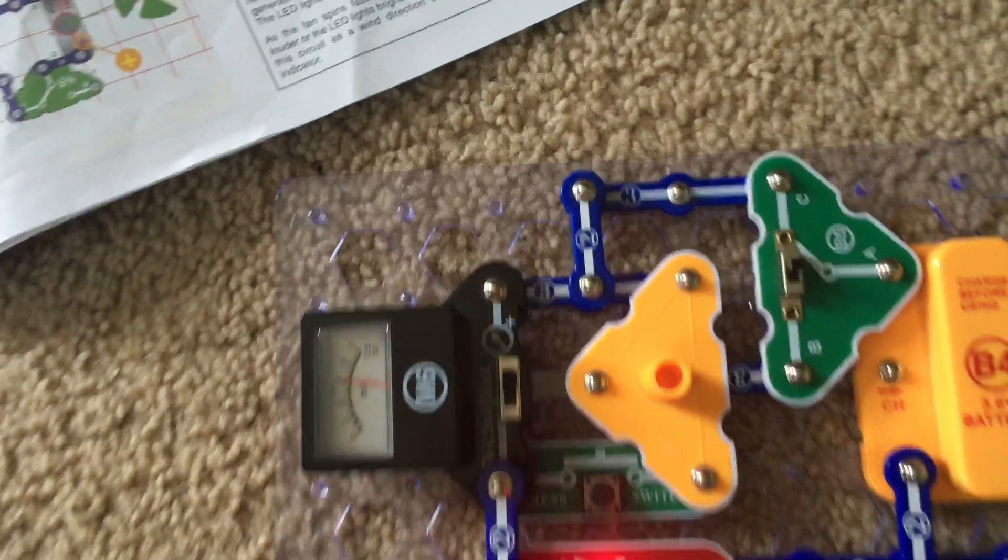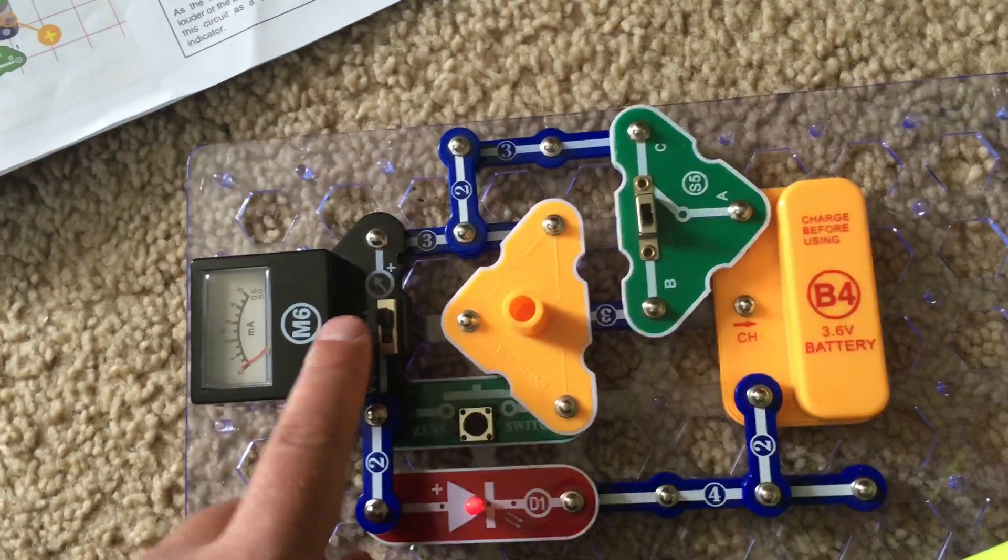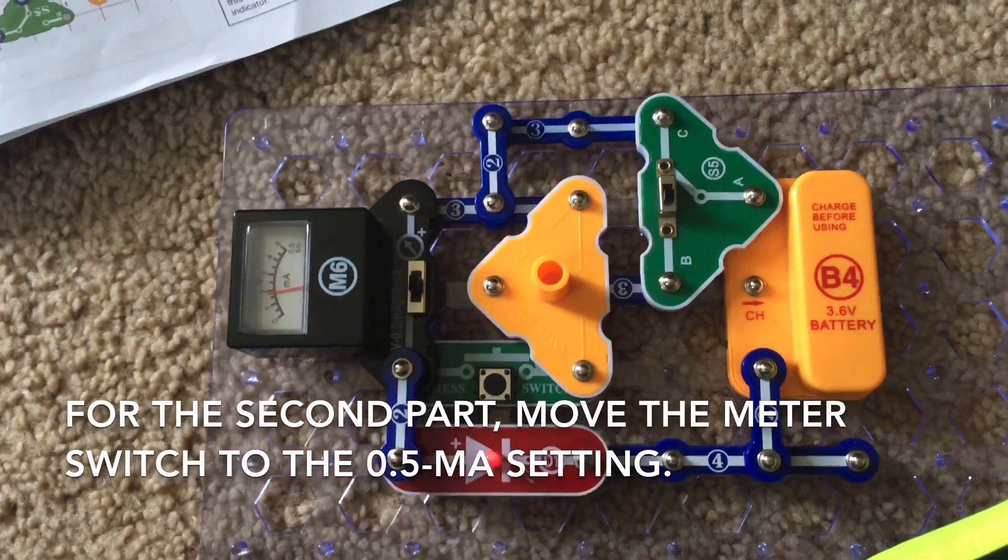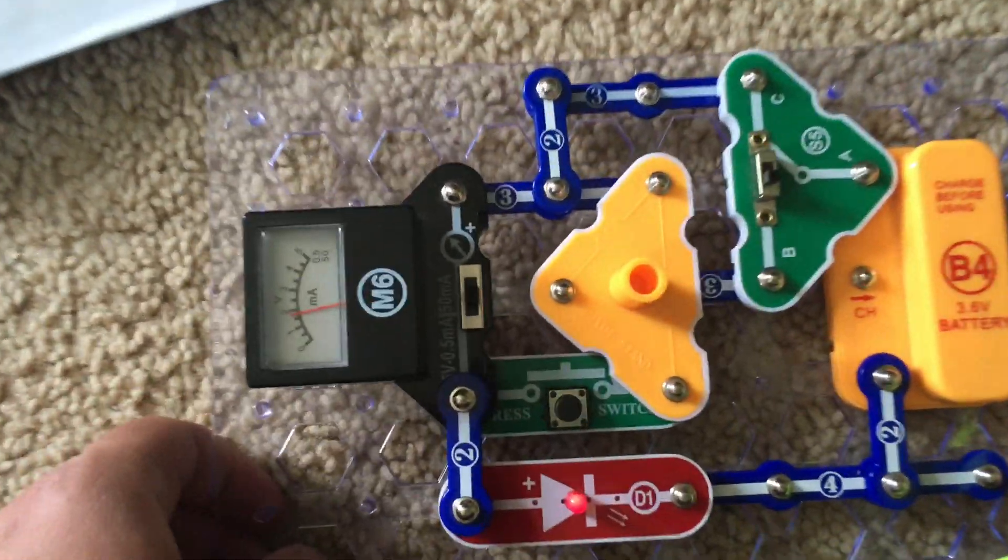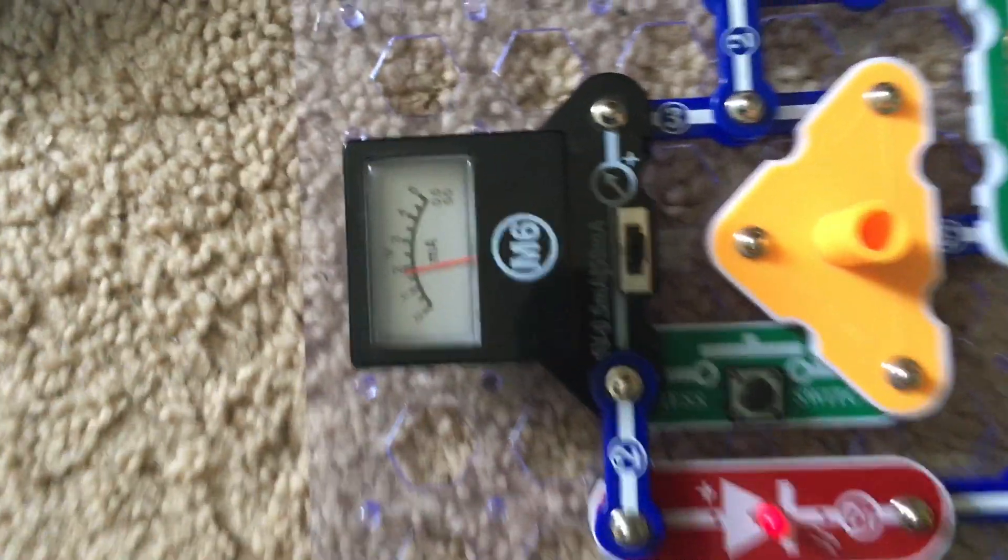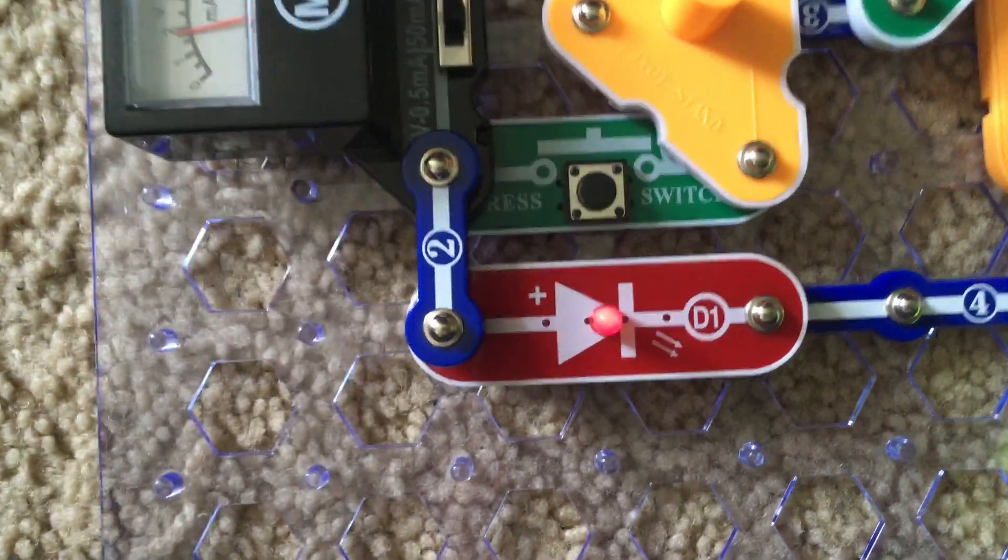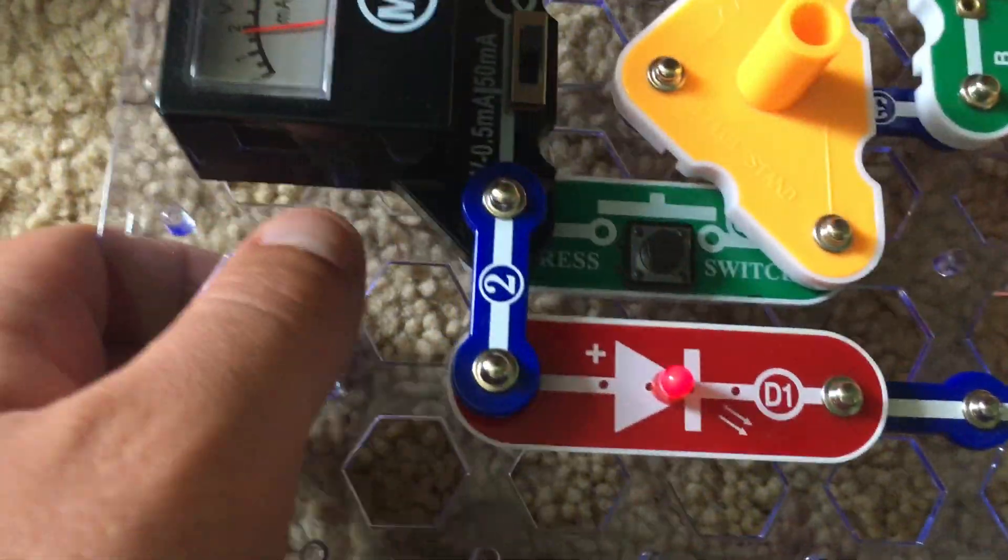Now for the 0.5 milliamp scale, we will move the slide switch to position B and move the current meter to the 0.5 milliamp setting. Now the meter reads less than 2.2 milliamps, and the LED is much dimmer since there is far less electricity flowing through.